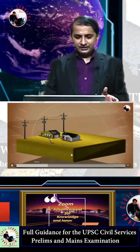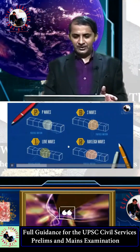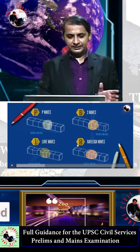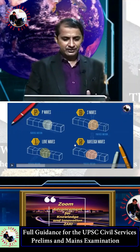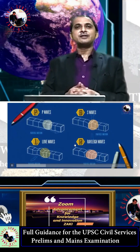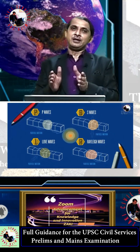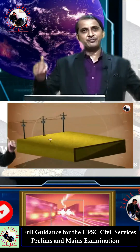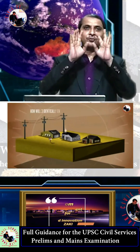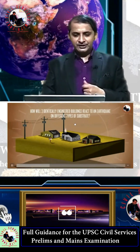So P-waves are primary waves, then S-waves, Love waves, and Rayleigh waves. After this, we move forward to see what type of earth surface and what type of buildings are affected by all four types of waves.